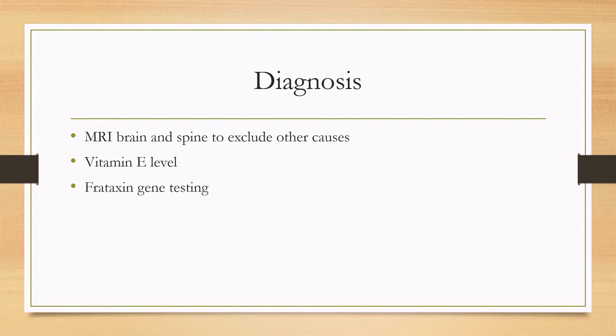If an adolescent comes in with ataxia, the workup starts with MRI of the brain and spine to detect any other causes. A vitamin E level can also be sent, since low vitamin E can cause a mimicker of Friedreich's ataxia. Otherwise, if someone in the right age range presents with ataxia, frataxin genetic testing is done, and this will clinch the diagnosis.